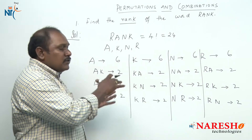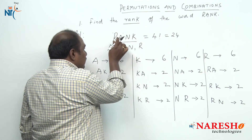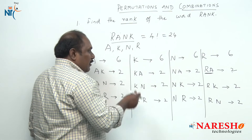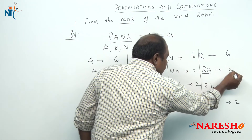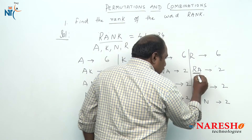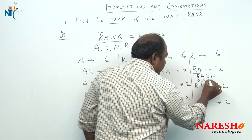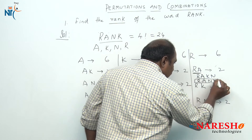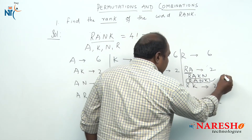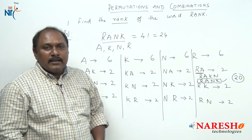Now our arrangement goes like this. If you look carefully, our word is RANK, that is our word starts with RA. So we have our word here in these two. These two arrangements, according to alphabetical order, should be RAKN and RANK. So our word comes after the first 18, and in the next two — that is, 6 plus 6 plus 6 is 18 and this is 2, making the rank of the word RANK equal to 20.